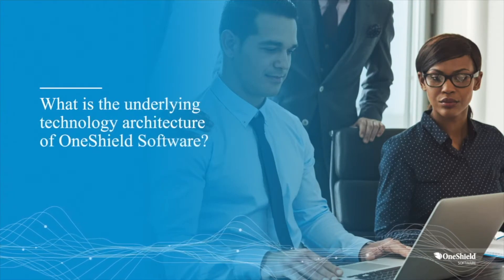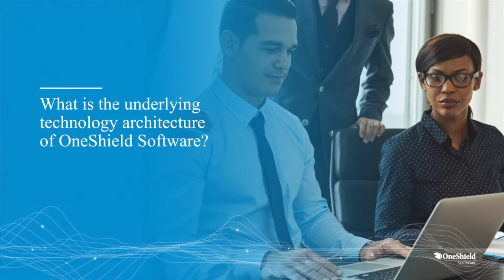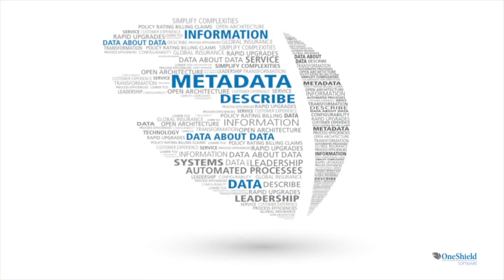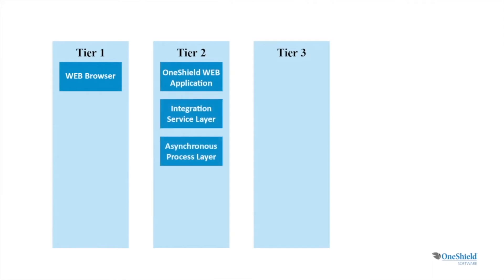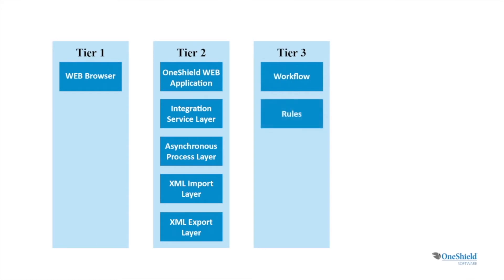OneShield insurance software is built on a metadata-based application development environment. Metadata is defined as data that describes an application, for instance how a web browser page is rendered or how a business workflow operates. The OneShield platform itself is implemented using a stateless Java enterprise architecture. This allows for fast and simple changes to product definitions, workflows, rating, and the object model.